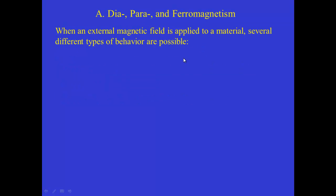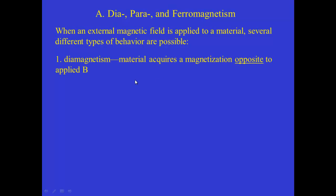When an external magnetic field is applied to a material, the kinds of phenomena that can happen are much richer than what we have when electric fields are applied to matter. There are several different types of behavior possible. First, diamagnetism, which is when a material acquires a magnetization or an alignment of the internal magnetic moments opposite to the applied B. The prefix 'dia' in this context means against.